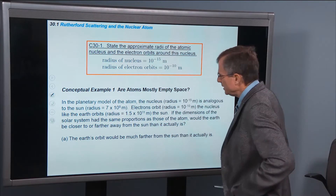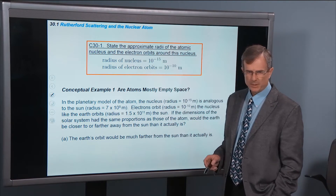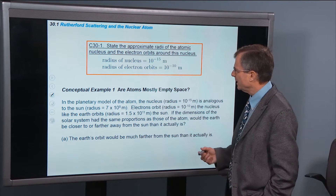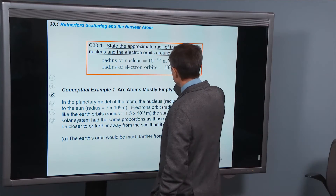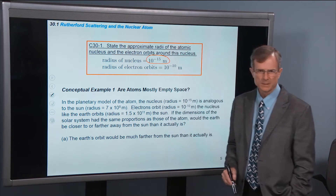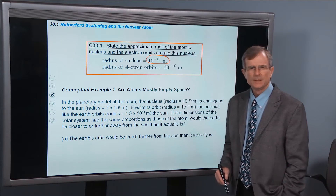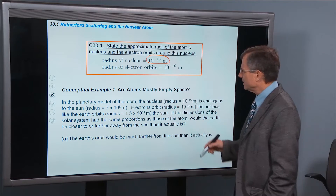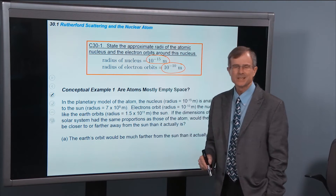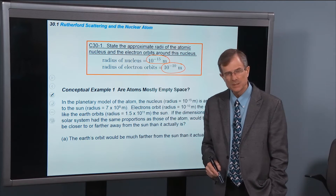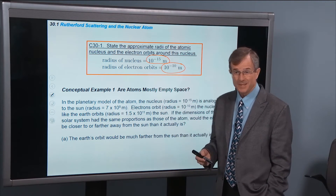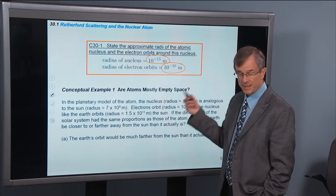His experiments, as well as other more recent experiments, have shown that the radius of the nucleus — the size of that nucleus — is about 10 to the minus 15 meters. Whereas the radius of electron orbits, the size of the atom itself, is about 10 to the minus 10 meters. So the difference between those is a factor of about 10 to the 5.